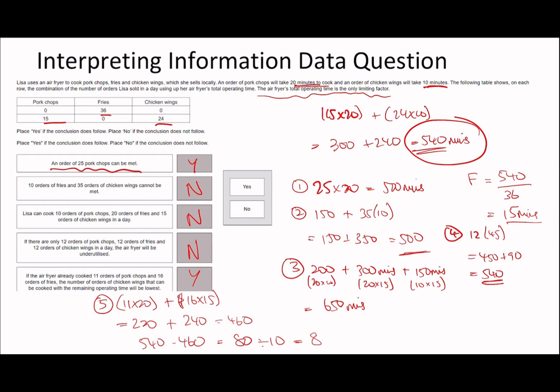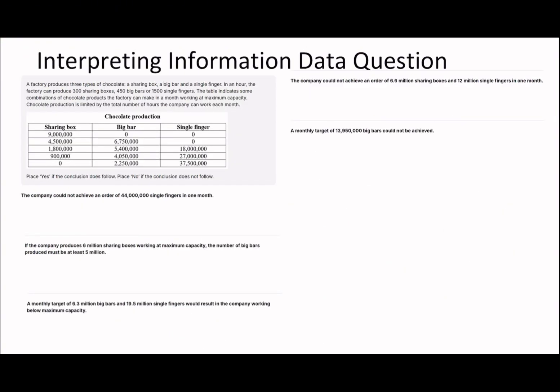That's basically the approach for any of these questions - you'll get repeats of this style. The key is understanding that for any interpreting information data question where the table mentions a limiting factor, you always need to identify what that limiting factor is - number of hours, number of people, and so on - and calculate the total.